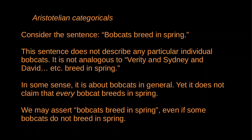First of all, notice that this sentence does not describe any particular individual bobcats. It's not like saying Verity and Sydney and David and so-and-so breed in spring. These sentences pick out specific individuals and describe what they do. Instead, there's some sense in which 'bobcats breed in spring' is about bobcats in general. And yet, it's not a universal generalisation about all bobcats, because obviously not every bobcat breeds in spring. When I say bobcats breed in spring, I'm not making a claim about each and every bobcat. I can reasonably assert 'bobcats breed in spring' even knowing that some bobcats do not.